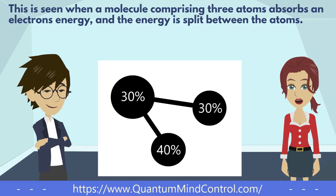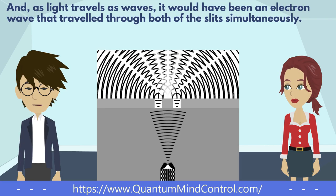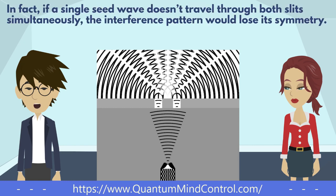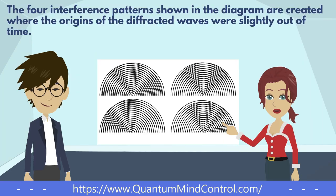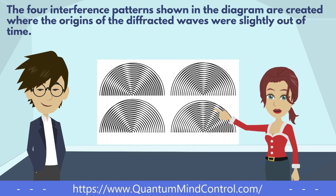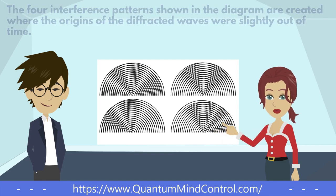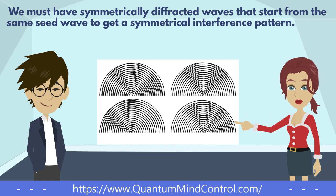We know the energy from a single electron can be divided into smaller parts when it's in waveform. This is seen when a molecule comprising three atoms absorbs an electron's energy, and the energy is split between the atoms. And as light travels as waves, it would have been an electron wave that traveled through both of the slits simultaneously. In fact, if a single seed wave doesn't travel through both slits simultaneously, the interference pattern would lose its symmetry. We must have symmetrically diffracted waves that start from the same seed wave to get a symmetrical interference pattern.